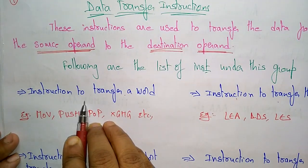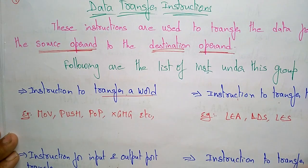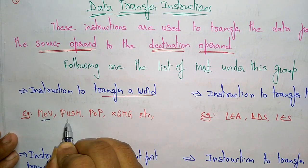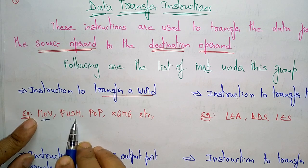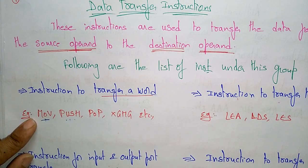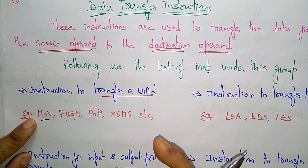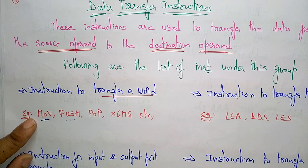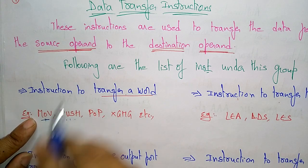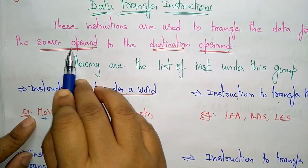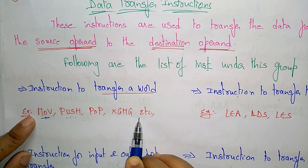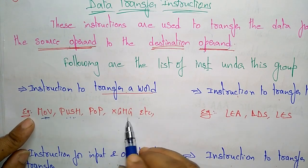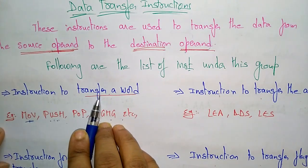For transferring a word, you use the instructions: MOV, PUSH, POP, and EXCHANGE. An instruction is essentially an op code that tells the processor what operation has to be performed on the operands — specifying what type of operation must be done from source operand to destination operand. MOV, PUSH, POP, and EXCHANGE are all types of instructions for transferring a word.